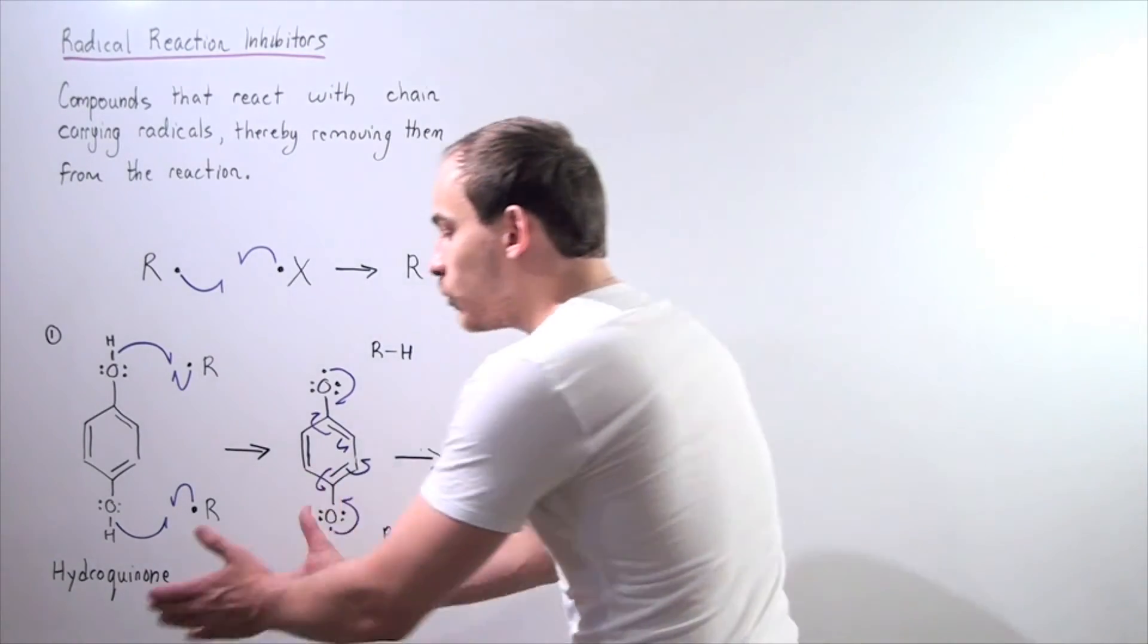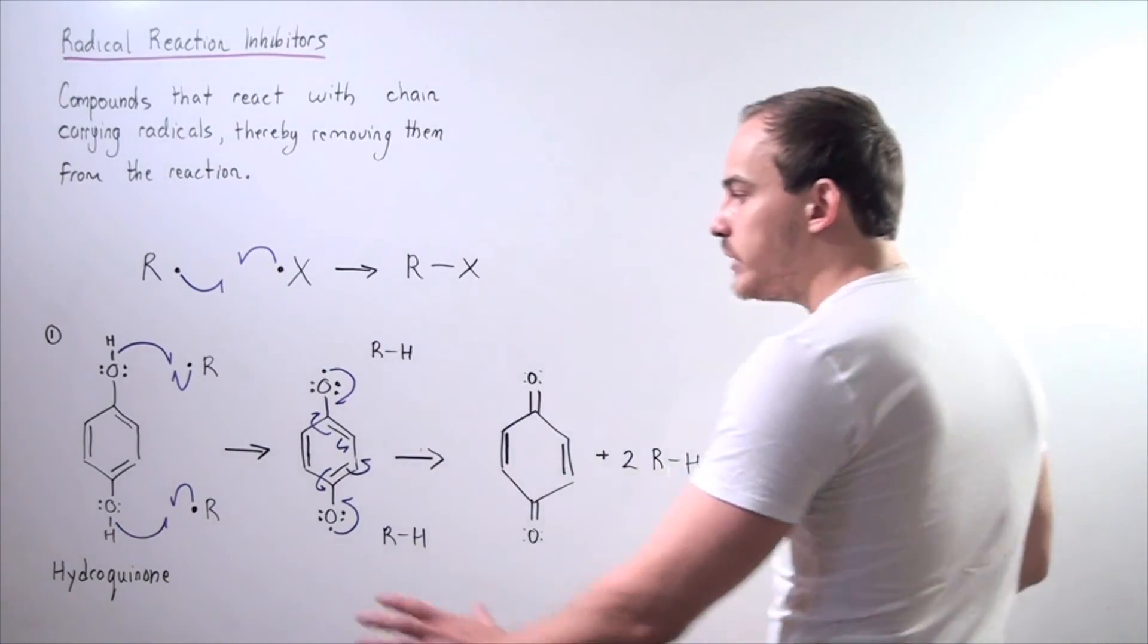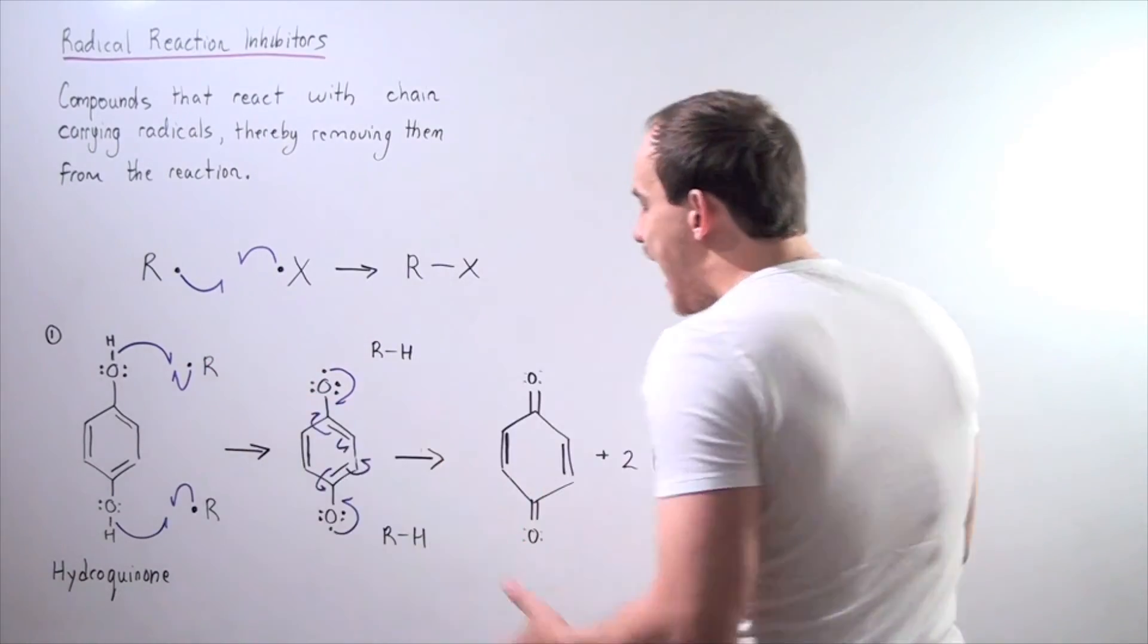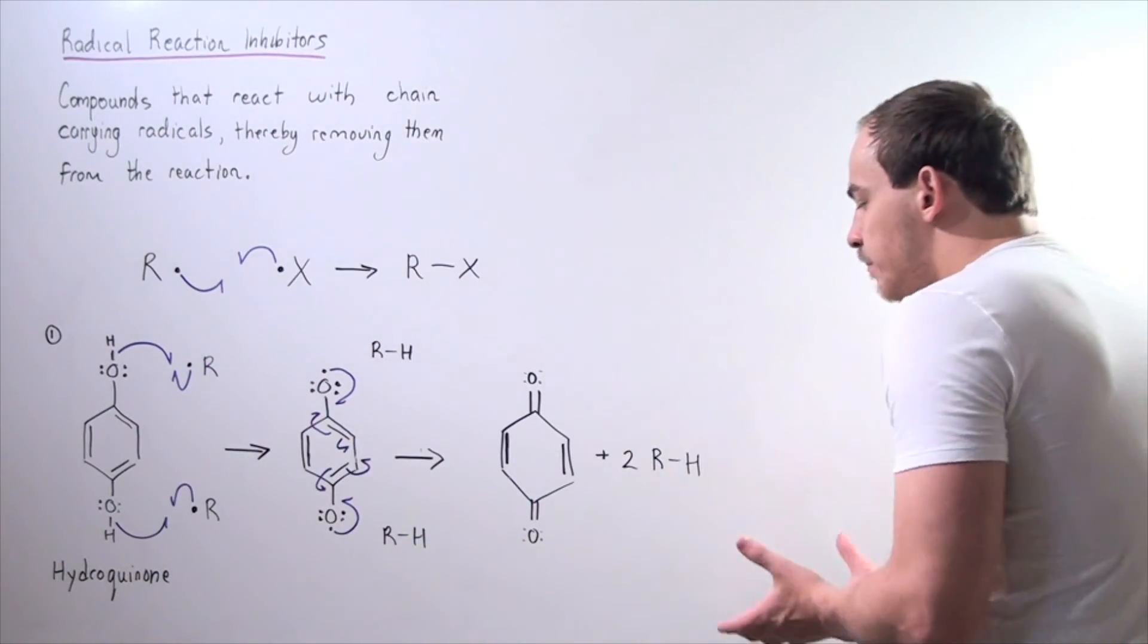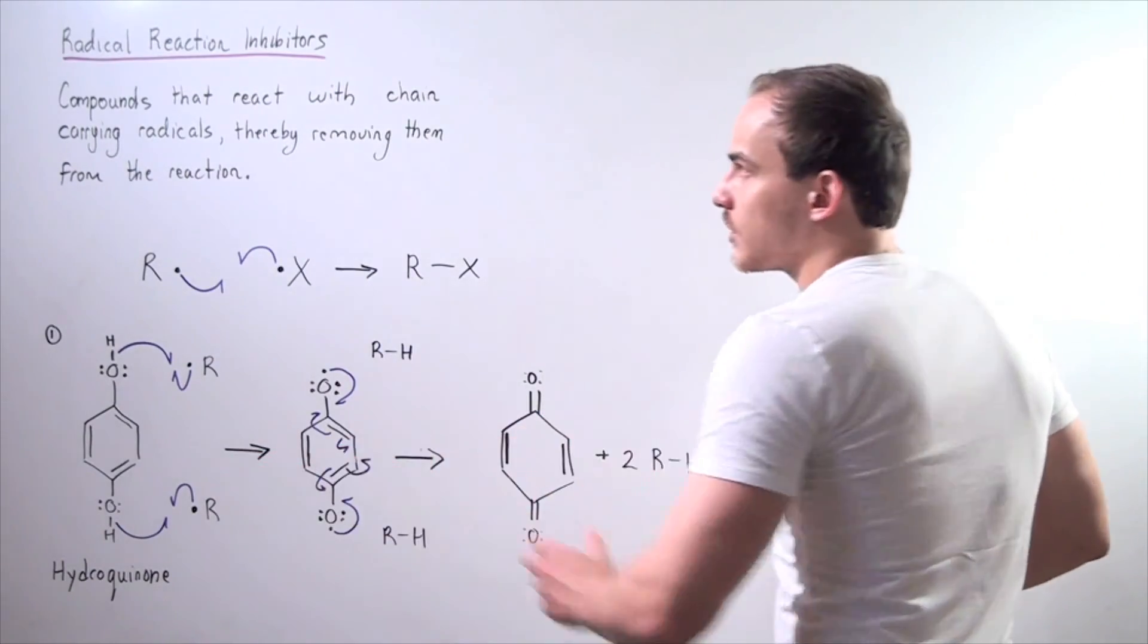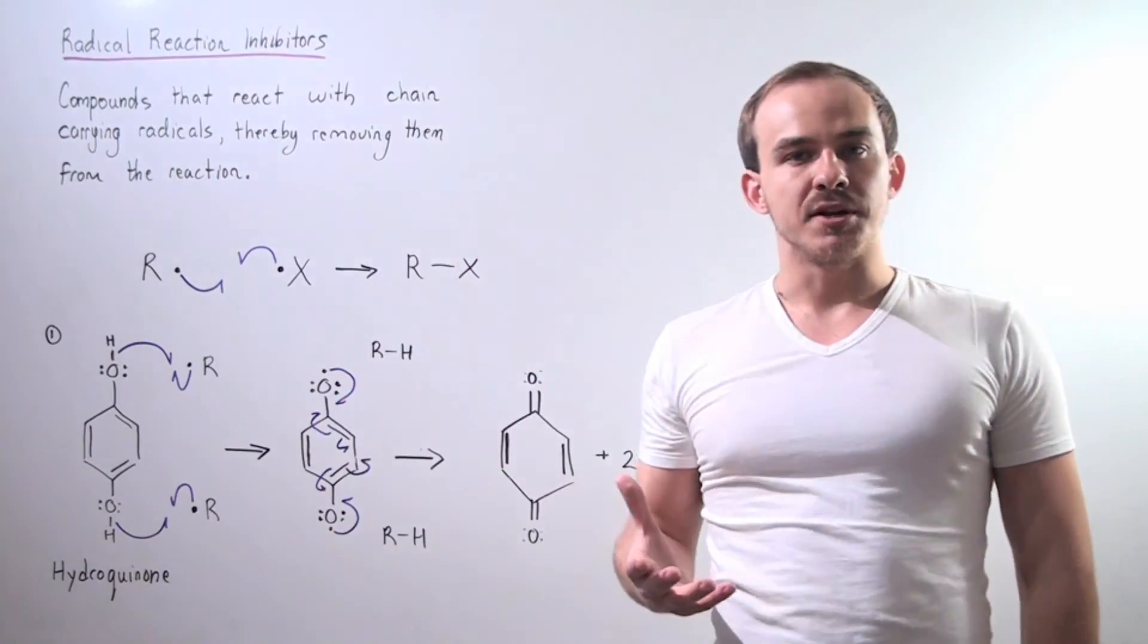So we go from the following hydroquinone to these two products. And notice that we began with chain-carrying radicals shown here. And we ended with simple neutral non-radical compounds. So this is one particular example of radical reaction inhibitors.